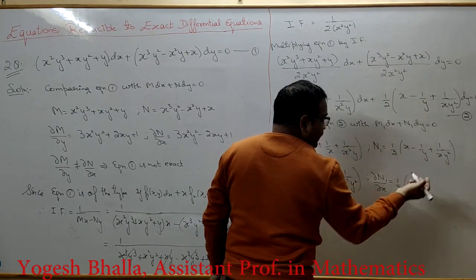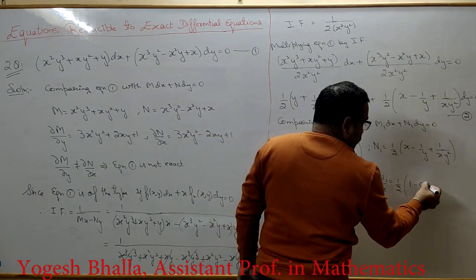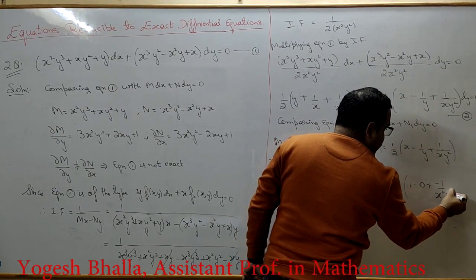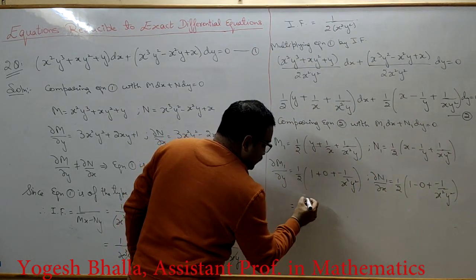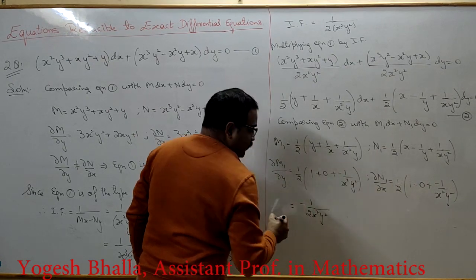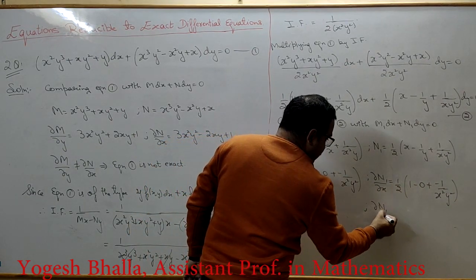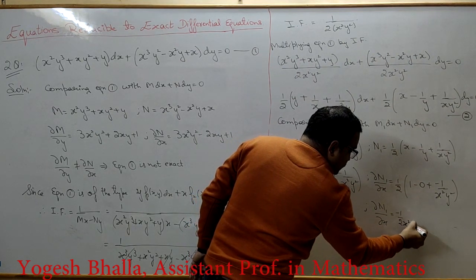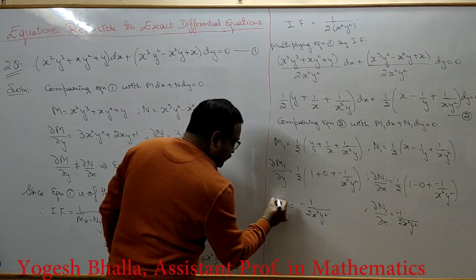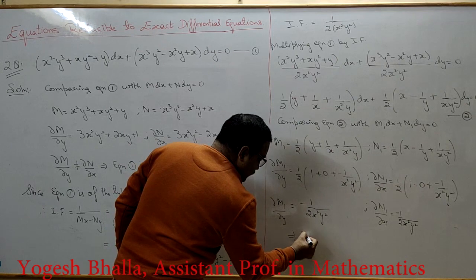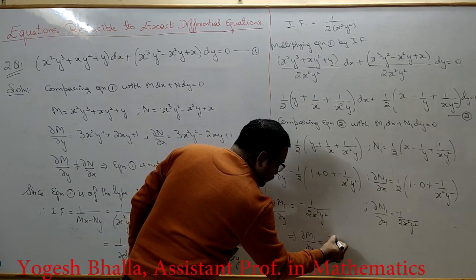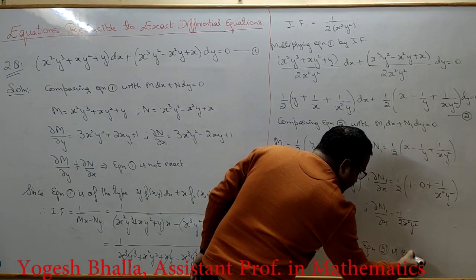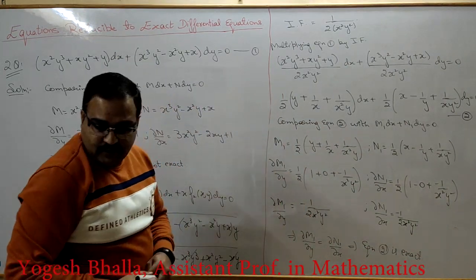Computing ∂N1/∂x: x/2 gives 1/2; −1/(2y) gives 0 (constant in x); and 1/(2xy²) gives −1/(2x²y²). So ∂M1/∂y = 1/2 − 1/(2x²y²) and ∂N1/∂x = 1/2 − 1/(2x²y²). Both are equal, so equation 2 is an exact differential equation.